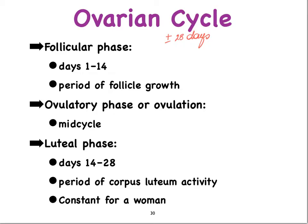If that is the case, then usually the first 14 days are occupied by the follicular phase, meaning that's when our follicles are growing. At the end of this phase, one of those follicles — the Graafian follicle — will ovulate during the ovulatory phase. The last phase is called the luteal phase, because this is the time when our corpus luteum is producing progesterone and estrogen.